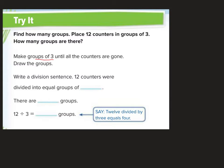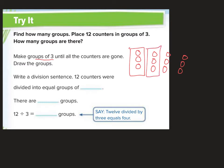I'll count out 1 through 12. So if I have 12 counters and I'm putting them into groups of 3 — not into 3 groups, but groups of 3 — I would get 1, 2, 3, 4 groups. So 12 counters were divided into equal groups of 3. There are 4 groups. So 12 divided by 3 equals 4.